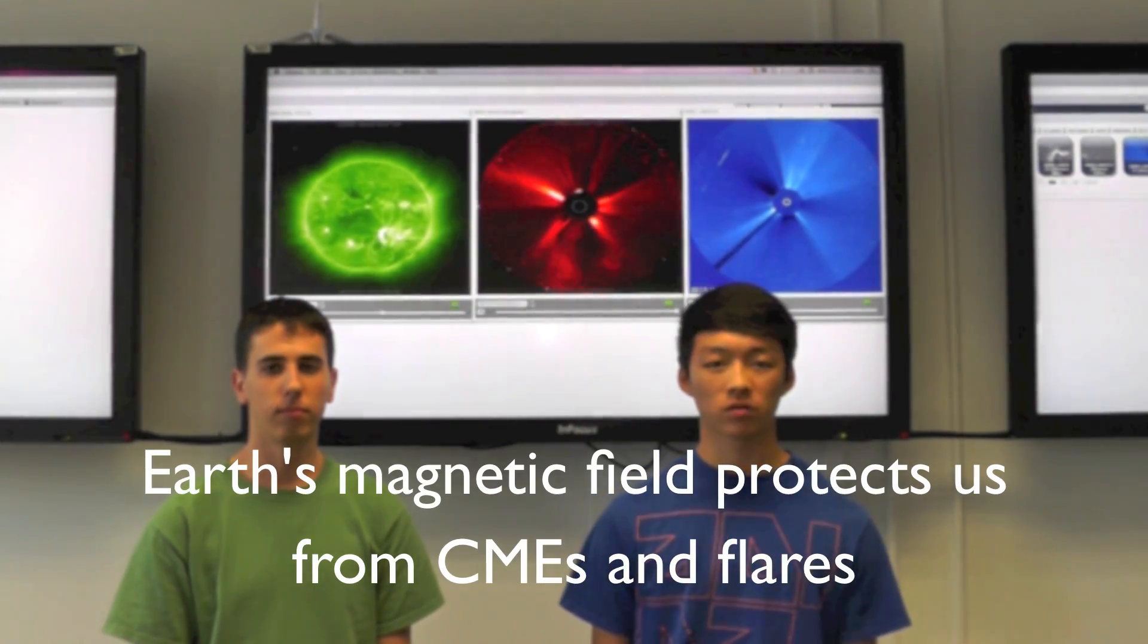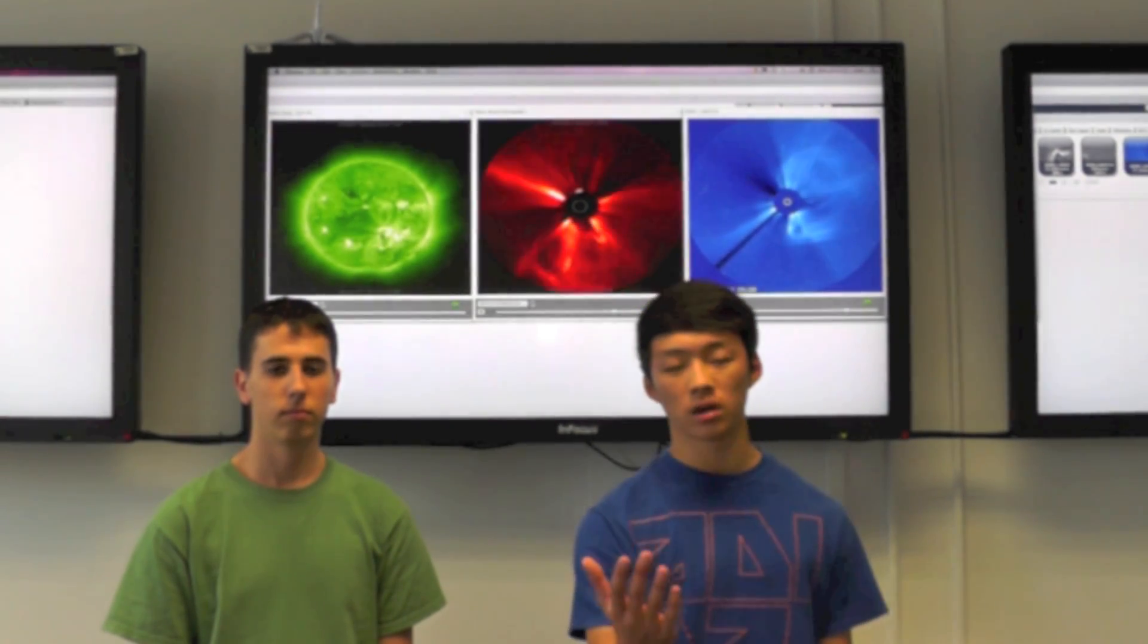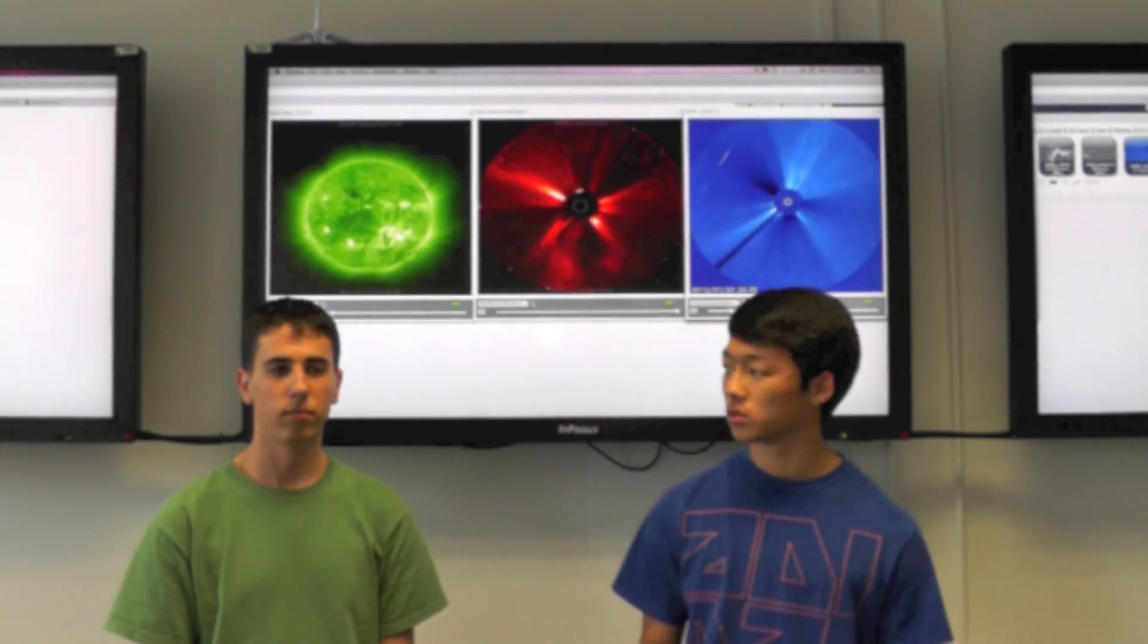If you remember from last week, Active Region 1520 provided us with an X-Class flare and an M-Class flare. This active region, however, has rotated behind the sun, but it's still providing with some exciting news. Josh?